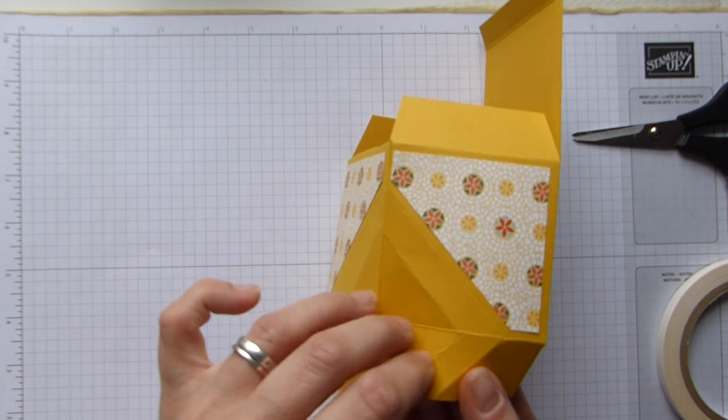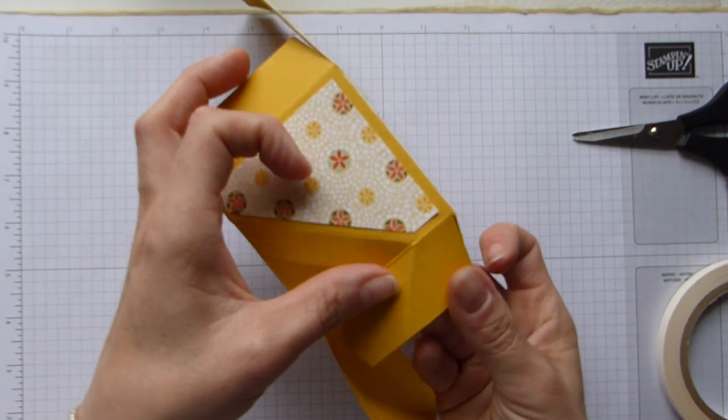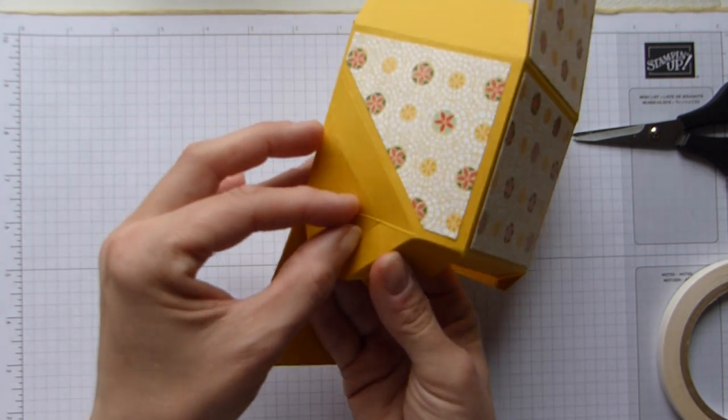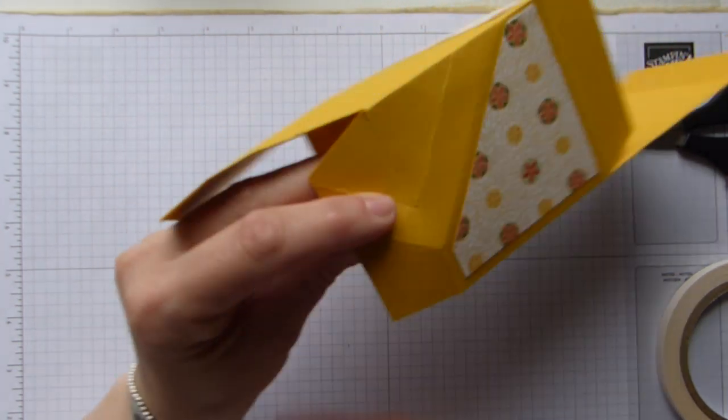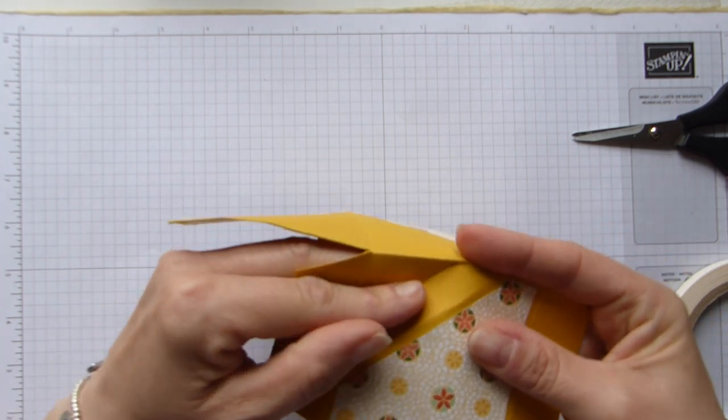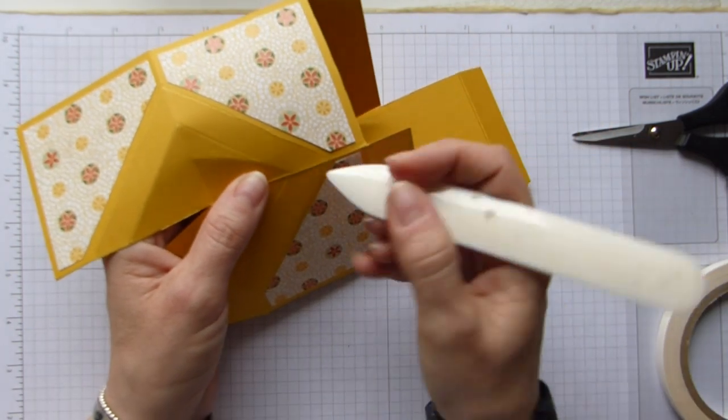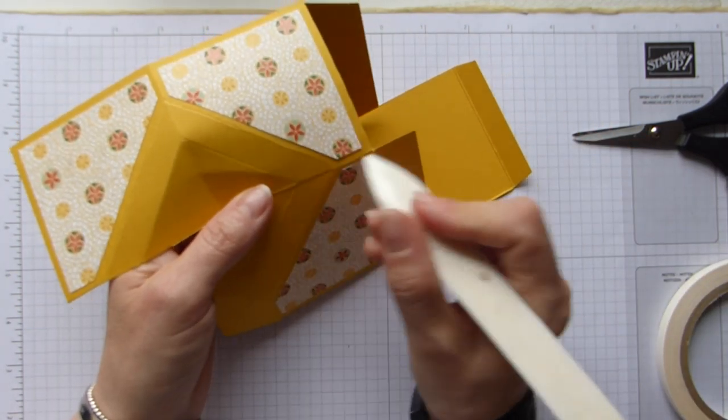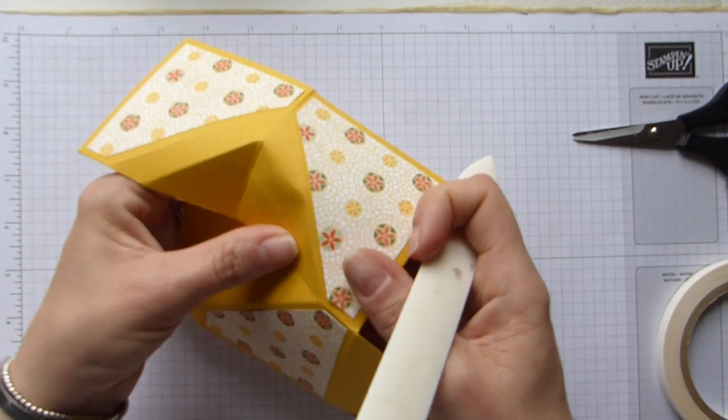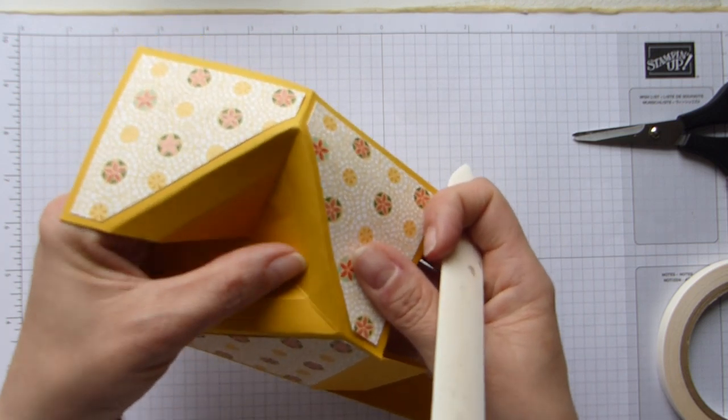And then I did find that if you do the tab first, because it's not got any sides to it, the rest kind of seems to follow suit. So in and up, in and up. And I also found that my bone folder worked wonders at encouraging which way things should go.